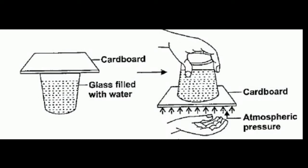Now what you have to do is hold the cardboard with one hand and then turn the glass upside down. As you can see in figure 2, the glass is turned upside down. To turn it, first put your hand above the cardboard, hold it with one hand, and then turn the glass upside down. Now it is time to gently remove your hand — do not remove it with force, but remove it gently from the cardboard.